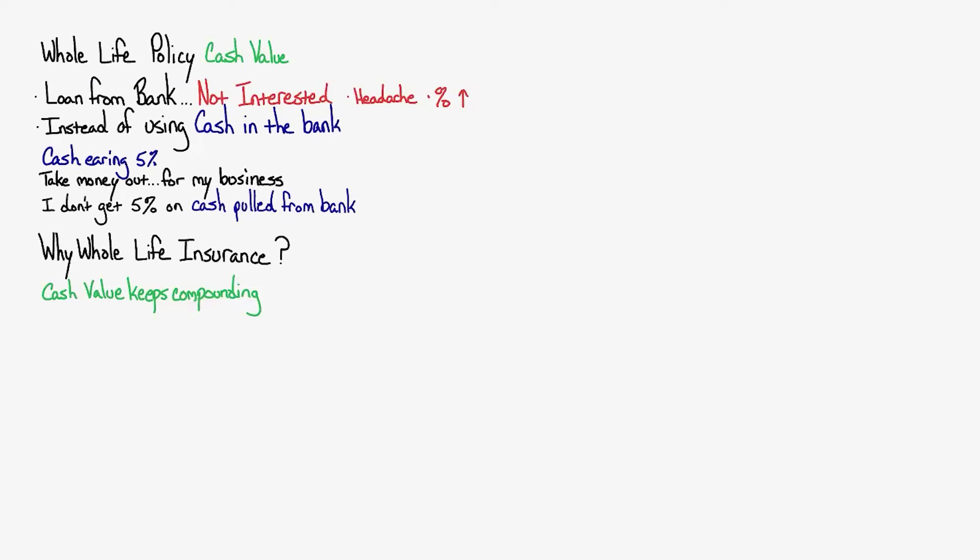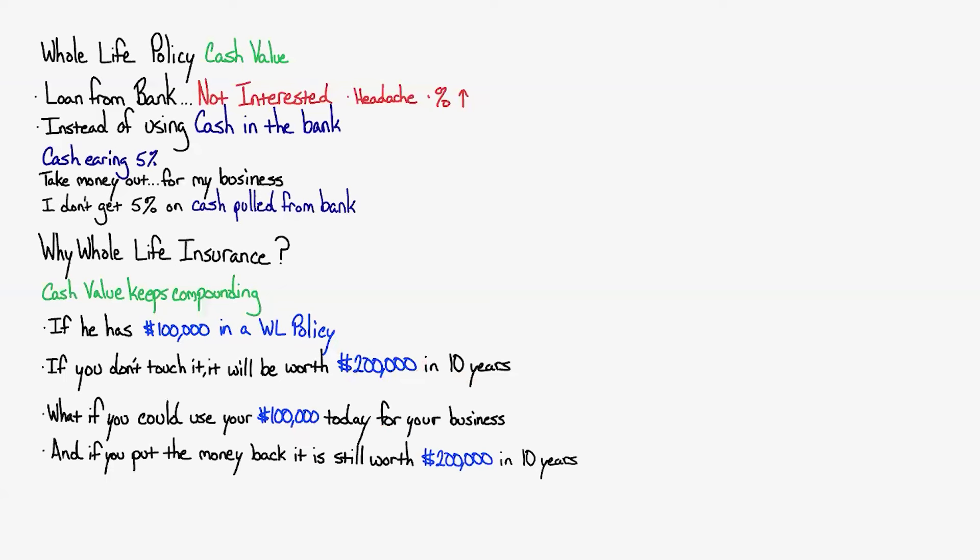We're going to demonstrate that exactly in his policy. But to give you an example first, pretend this is you: if you have $100,000 in cash value in a whole life insurance policy and you know that if you don't touch it it'll be worth $200,000 in 10 years. What if I said you can use it for your business today, so that $100,000 you have access to you could use for your business which you know is going to earn the highest return for you.